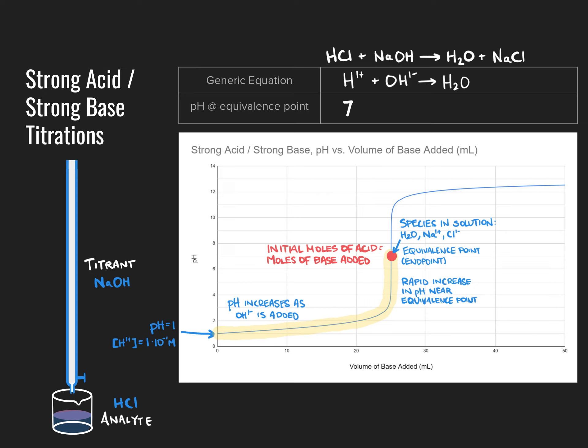If we continue to add base past that endpoint, the pH continues to increase and then levels off around pH 12 or so. One of the key understandings here is why this graph takes the shape it does — why the initial change in pH seems very gradual, but as we approach the endpoint the curve gets steeper and steeper before gradually tapering off again.